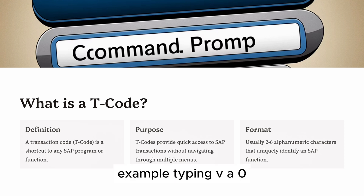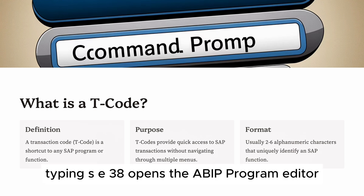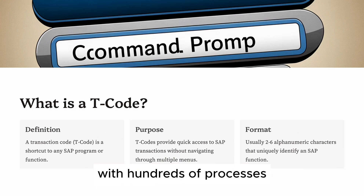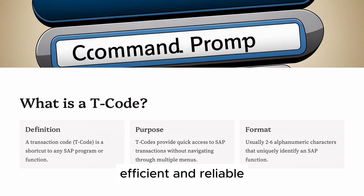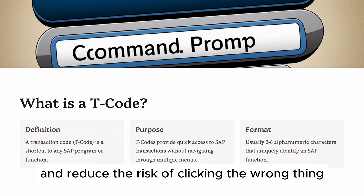For example, typing VA01 takes you straight to Create Sales Order, and typing SE38 opens the ABAP program editor. T codes make navigation fast, efficient, and reliable in SAP, which is used in massive companies with hundreds of processes. They also help you become more productive and reduce the risk of clicking the wrong thing.